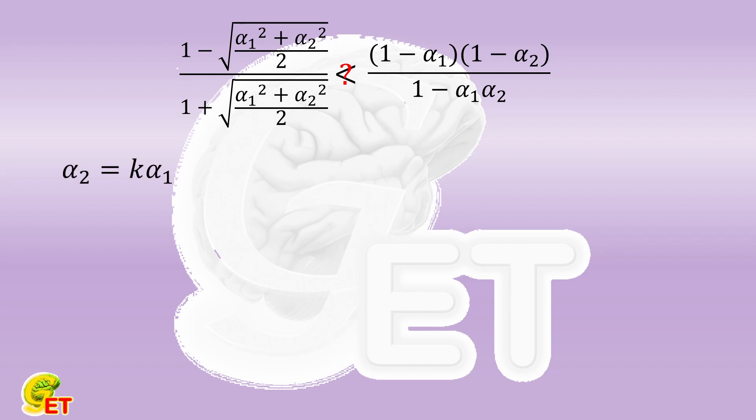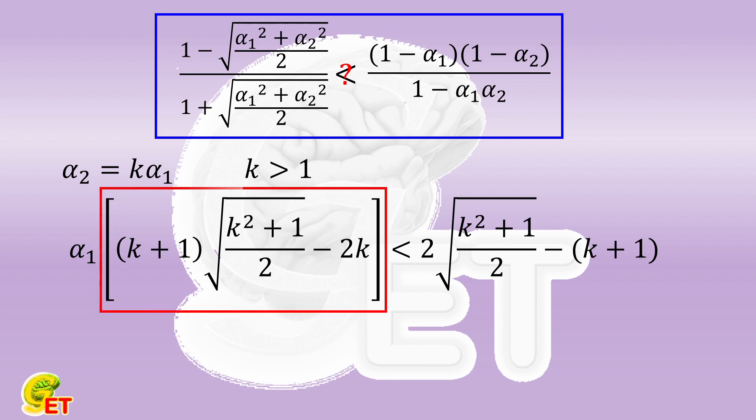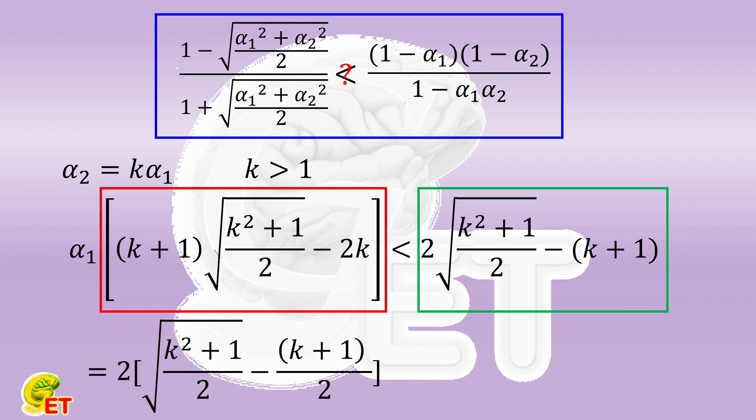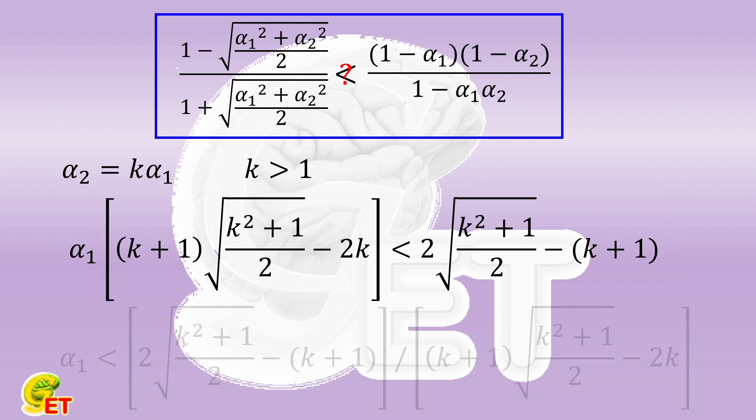We set α₂ equal to k times α₁, where k is bigger than 1. Then we bring it into the inequality that is opposite to the original one and is to be proved to have solutions. We will then get the following inequality. The part in the red square is equal to (k + 1) times the difference between the quadratic mean and the harmonic mean of k and 1. Since k is bigger than 1, this difference is bigger than 0. The part in the green square is equal to twice the difference between the quadratic mean and the arithmetic mean of k and 1. Again because k is bigger than 1, so this difference is bigger than 0 as well. So we get the solution for α₁. This ratio is bigger than 0, so this solution must have an intersection with that α₁ is bigger than 0 and smaller than 1/k.